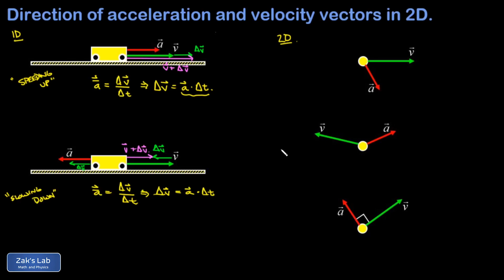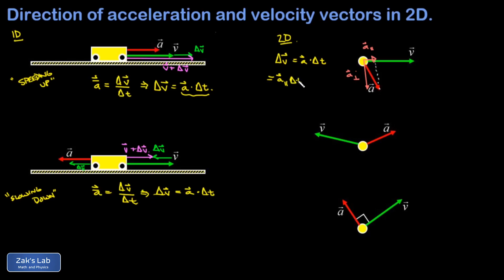Now, what happens when we extend this to two dimensions? In the pictures on the right, I have three different cases of relationships between acceleration vectors and velocity vectors in a two-dimensional space. The key is to break that acceleration vector into components. In the first case, there's a component pointing in the same direction as the velocity vector — we call that a-parallel, the parallel component of the acceleration vector. And there's a component pointing perpendicular to the velocity vector. The change in my velocity vector is given by my acceleration vector times delta t. Writing acceleration as a sum of its two components, I get a-parallel times delta t plus a-perpendicular times delta t. And a-parallel times delta t points in the same direction as the original vector v — that's the first contribution to the change in the velocity vector.